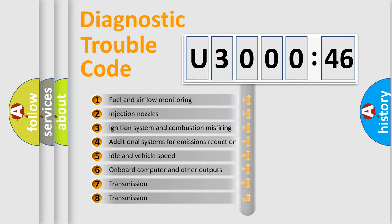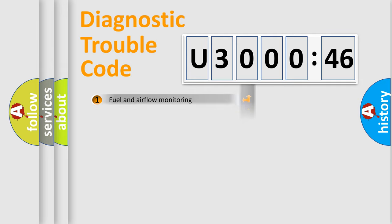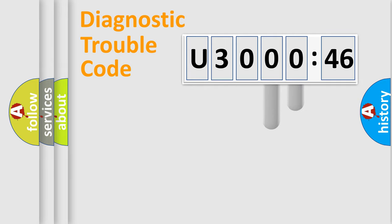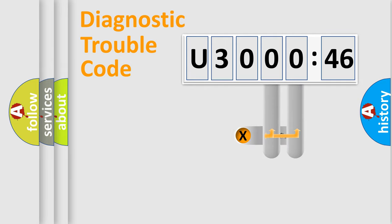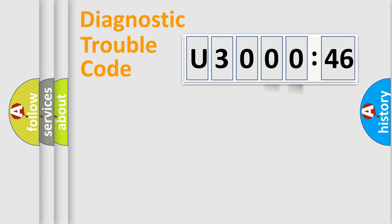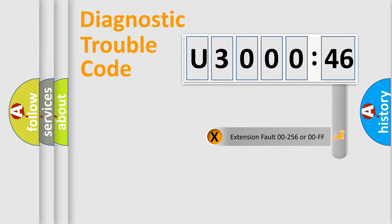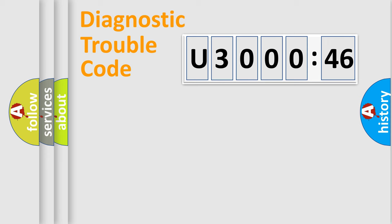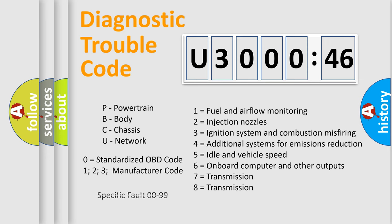The third character specifies a subset of errors. The distribution shown is valid only for the standardized DTC code. Only the last two characters define the specific fault of the group. The add-on to the error code serves to specify the status in more detail — for example, a short to ground. Note that such a division is valid only if the second character code is expressed by the number zero.